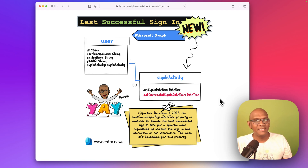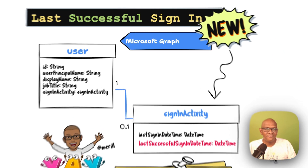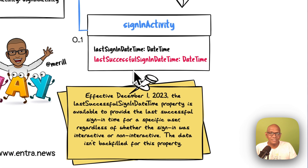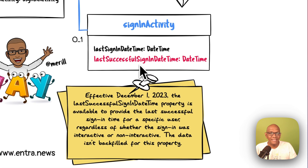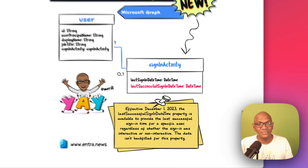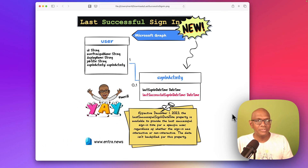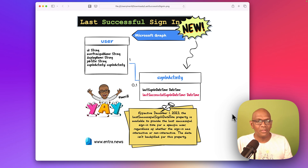The user object in Microsoft Graph just got a new addition that's going to be very useful — the last successful sign-in date from the sign-in activity. It contains the last time a user signed in successfully into the tenant, and this is stored in the user object, so it's not impacted by the 30-day limit you get from the sign-in logs.